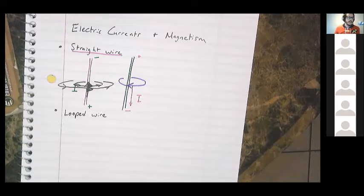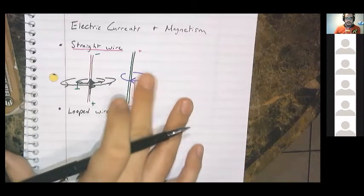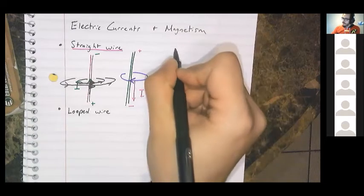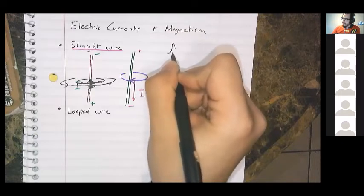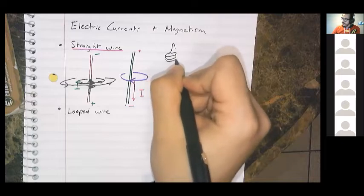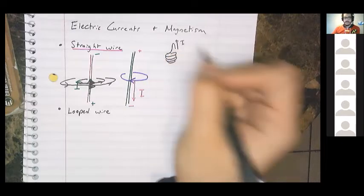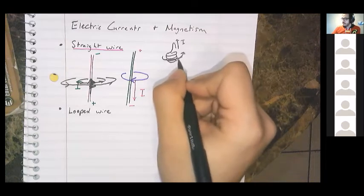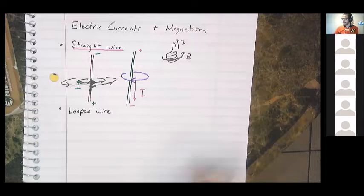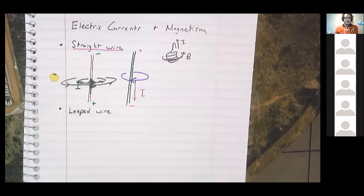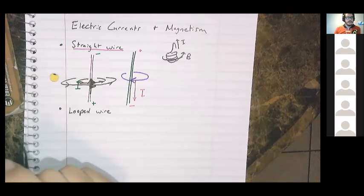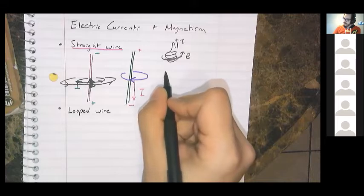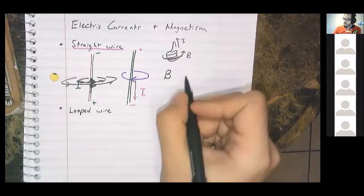If you have a negative current, all you have to do is use your left hand. But for the most part, we're going to be dealing with positive currents because that's the convention, and therefore your right hand will be useful. Your thumb represents a positive current and your fingers curl in the direction of the magnetic field — magnetic field usually given the symbol capital B. The more current you have, the more magnetic field strength you will have.